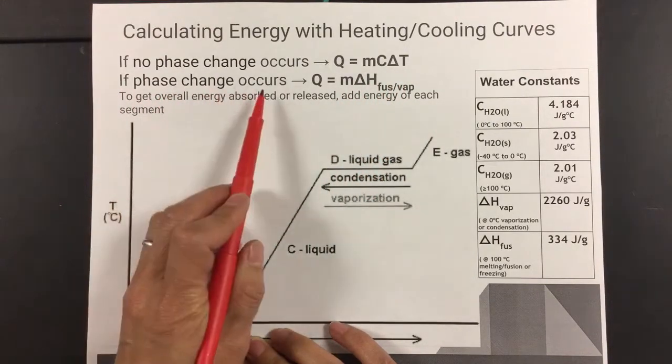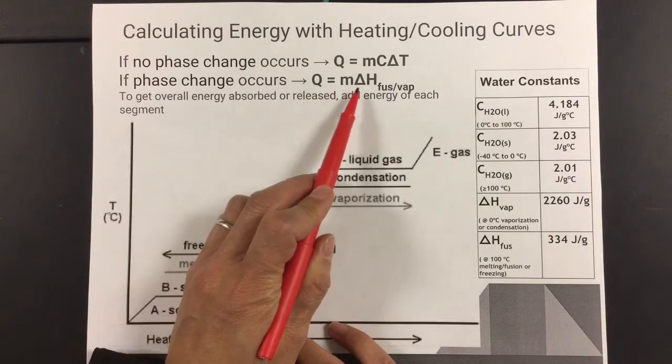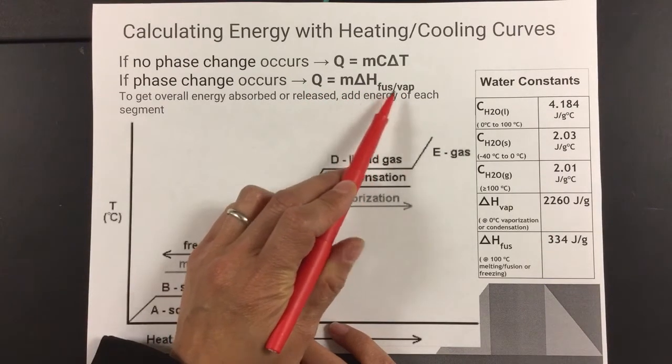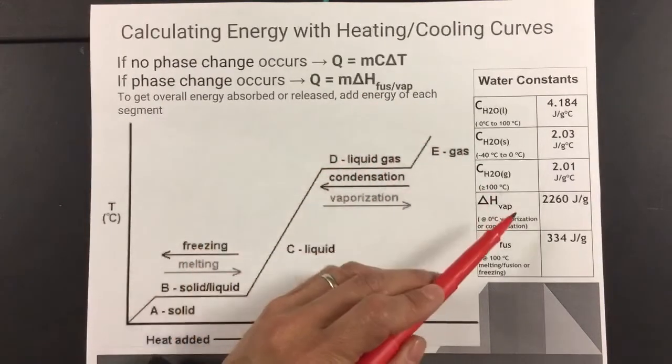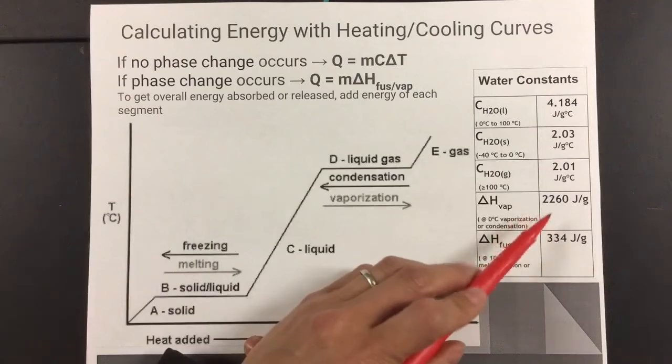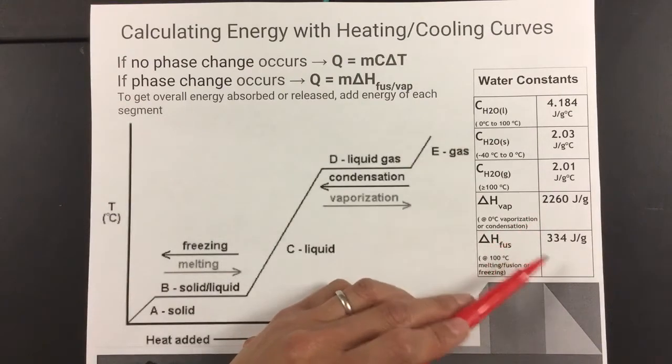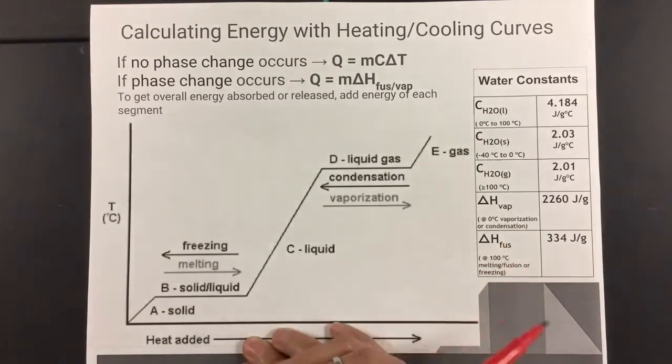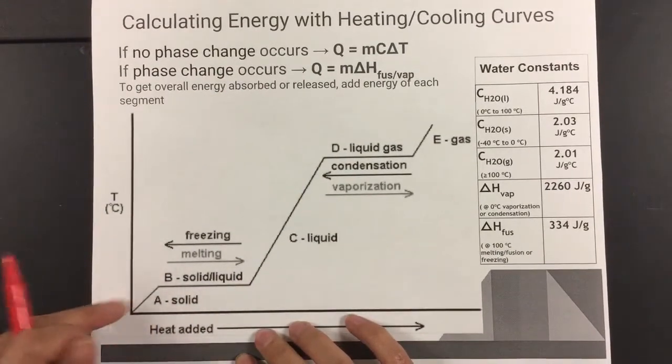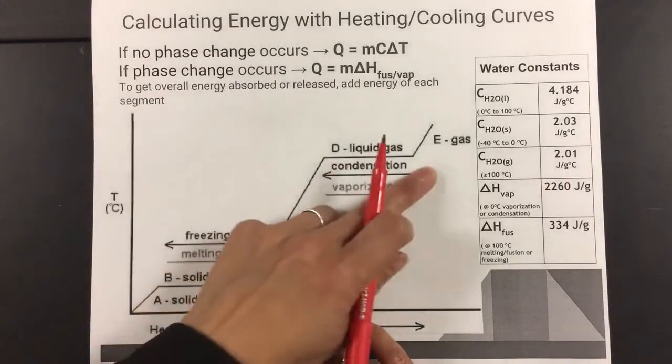And then if there's a phase change that occurs, we're using Q equals m times ΔH of fusion or vaporization. That's oftentimes given to us as a constant like you see for water here. This is water's heat of vaporization, and this is water's latent heat of fusion. So let's go ahead and take a look at which equation we would use in which instance of the segment.